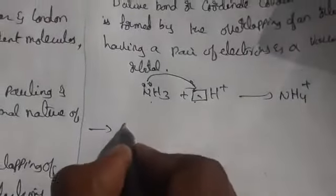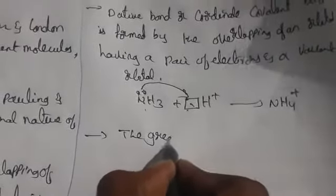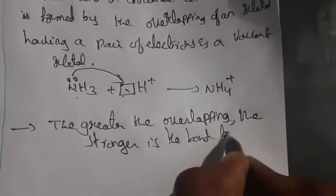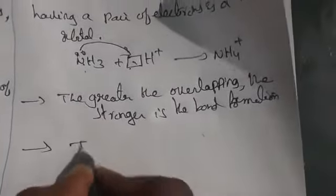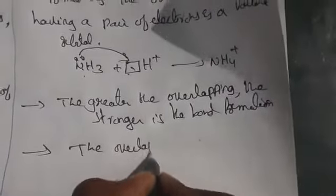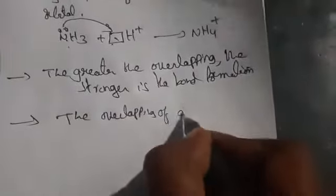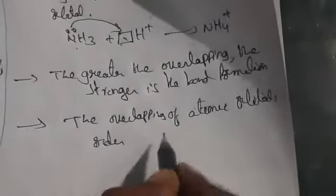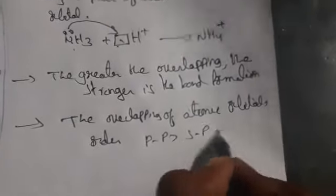The greater the overlapping, the stronger is the bond formation. The overlapping of atomic orbitals follows this order of strength: p–p > s–p > s–s.